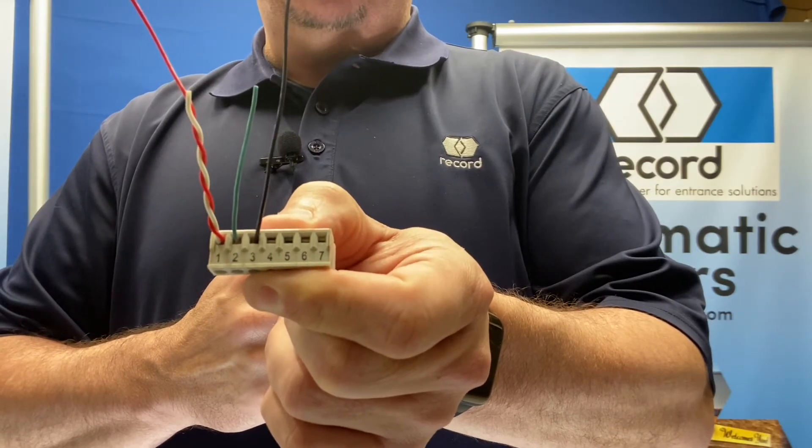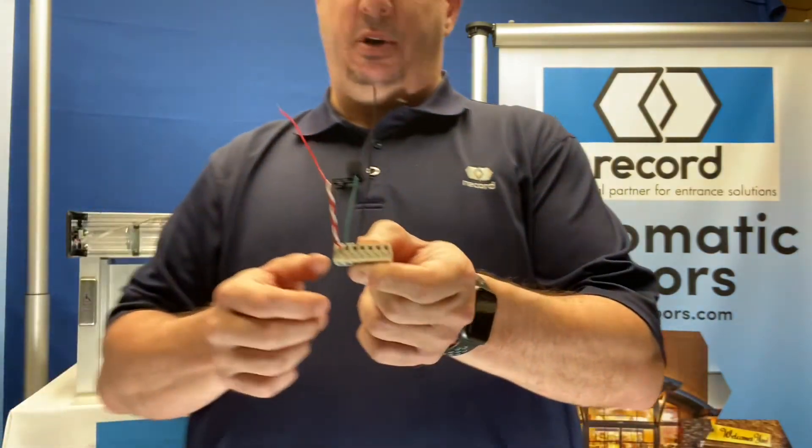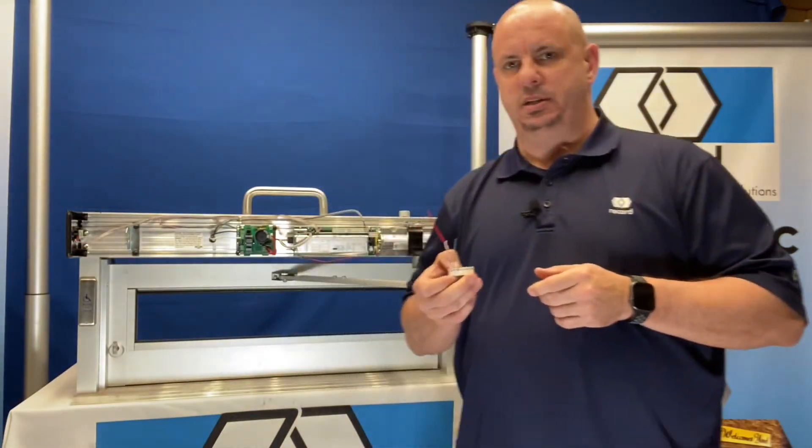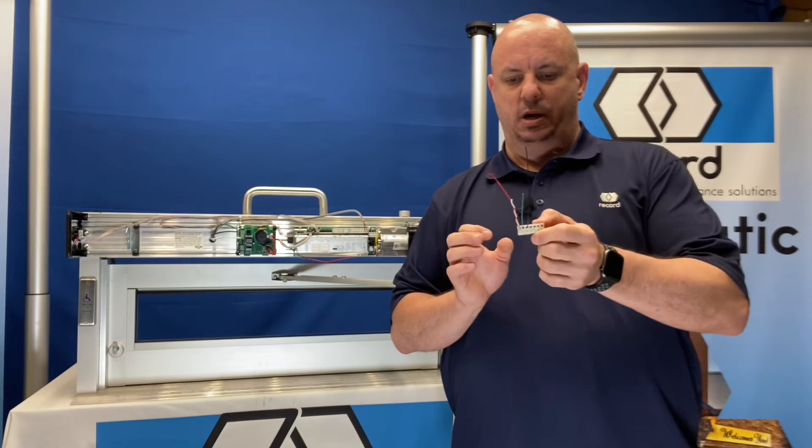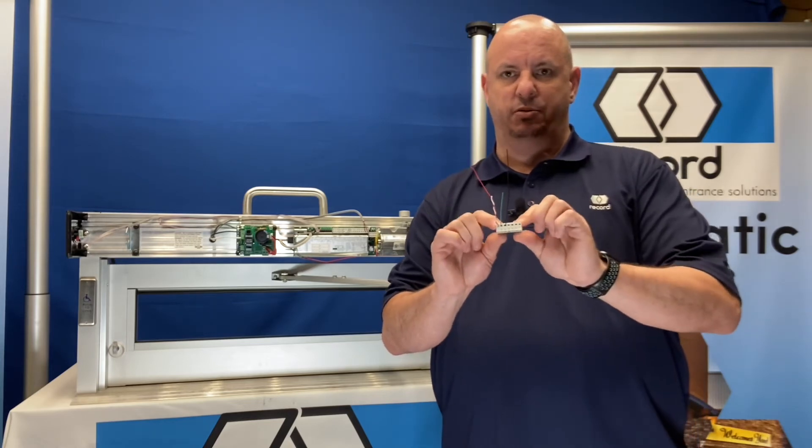Remember, candy cane on one, green on two, black on three, and you will have success in wiring your wireless receivers into the Record operator.